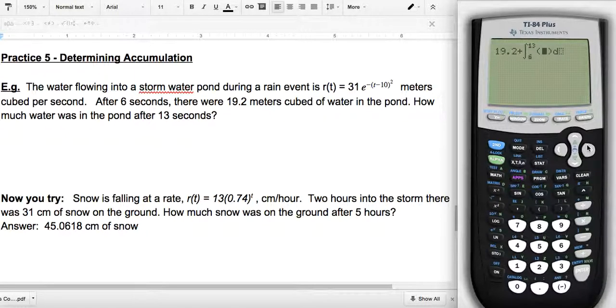And here's the function. Function is 31 times by second function E to the negative bracket X minus 10, close bracket, squared. And of course, I'm integrating with respect to X. So then I hit equals, and altogether, I've got 74 cubic meters of water, 74.1454 meters cubed of water. So notice it was 19.2 at six seconds. And then I add this accumulation between six and 13 to get a final answer.